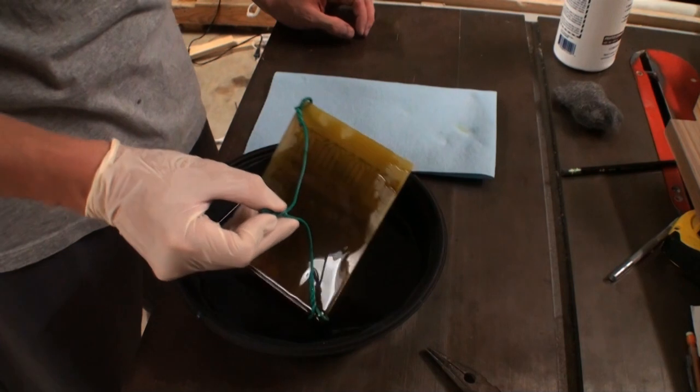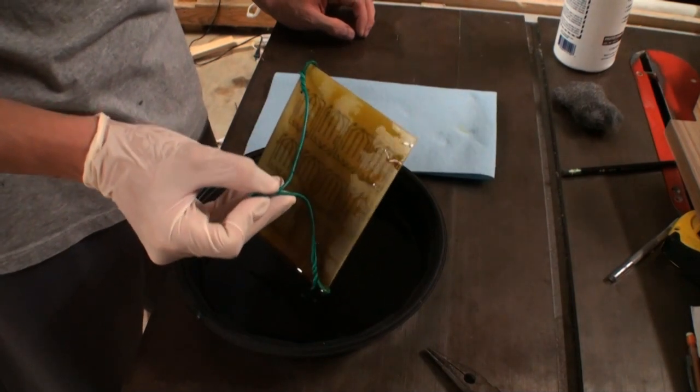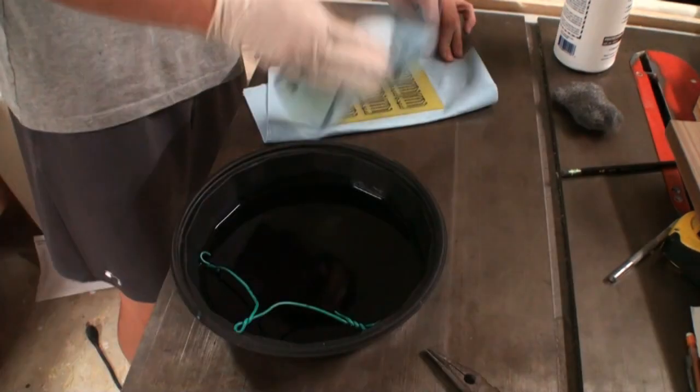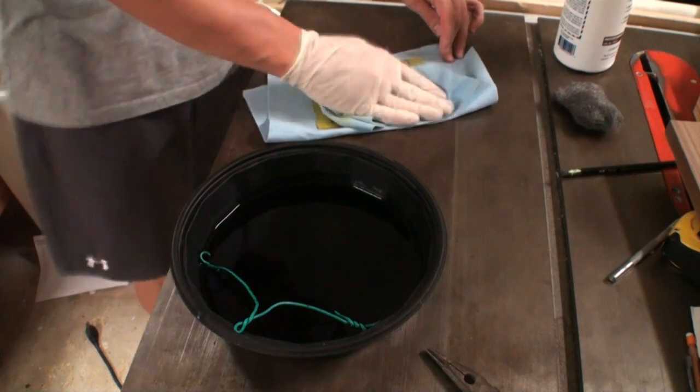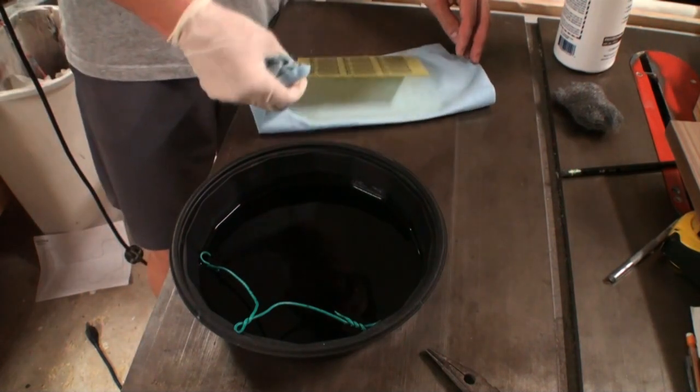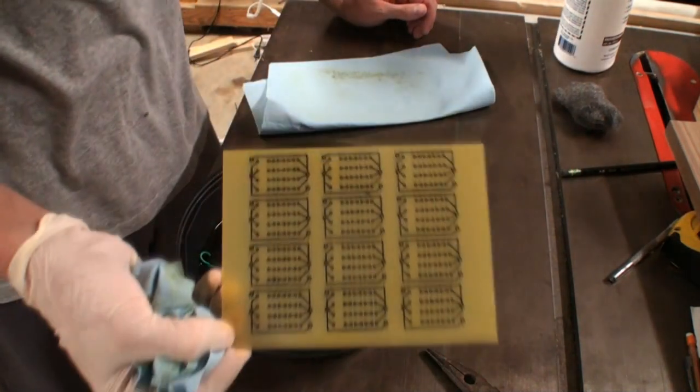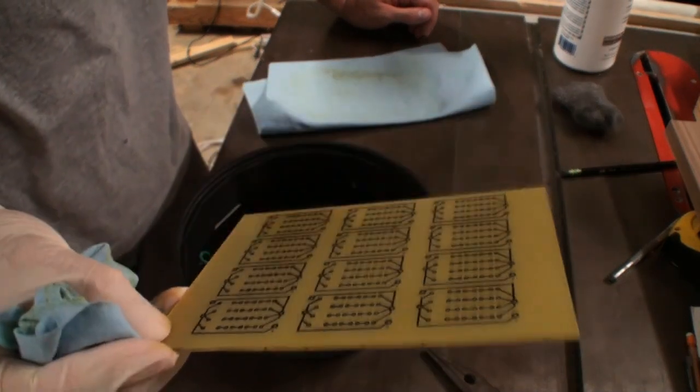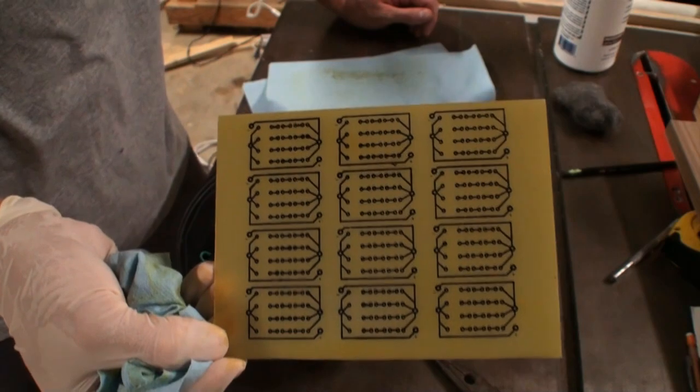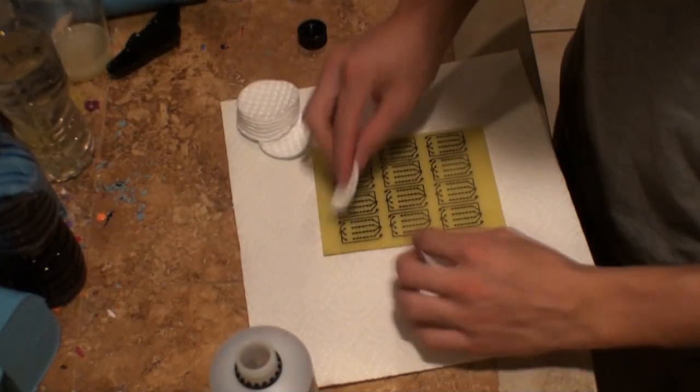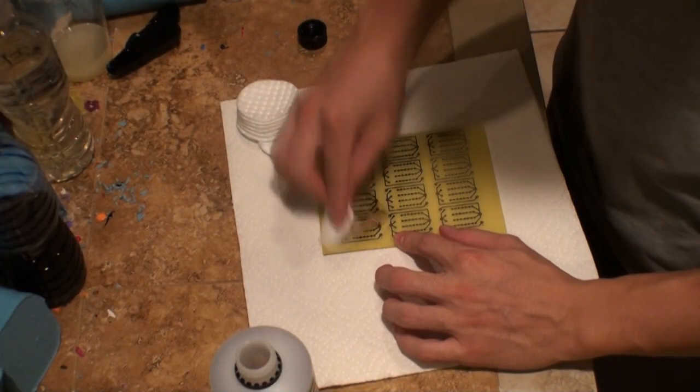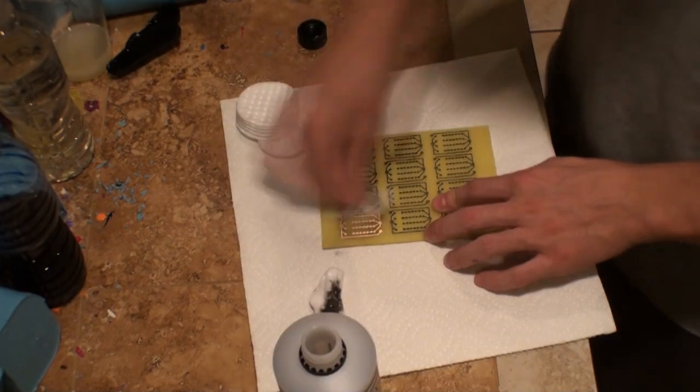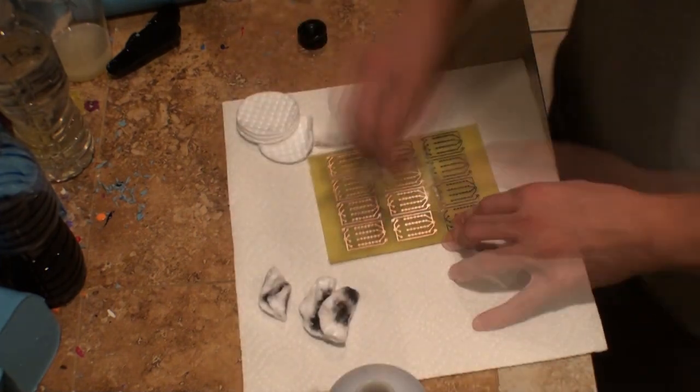Now we're done with the etching. I'm going to pull it out and just dab it down. And then we're going to run it under some water, remove all of the chemicals from the board. And you can see what we're left with here. We've got all of the copper has been stripped away, except for what lies underneath the black ink there. Now we'll use a little bit of acetone to remove the ink toner. And we will be left with all of our miniature little circuits.